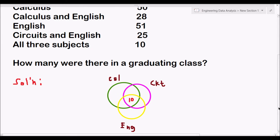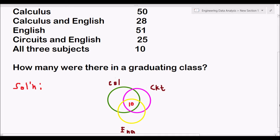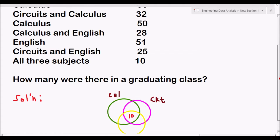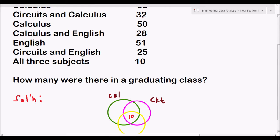Next, we will consider the students who like Calculus and Circuit. How many students like Calculus and Circuit? 32. We have 32 here, but in the 32 there are already 10 of that who likes all of the three. So that is 32 minus 10. How many will be put in this region? Only 22.